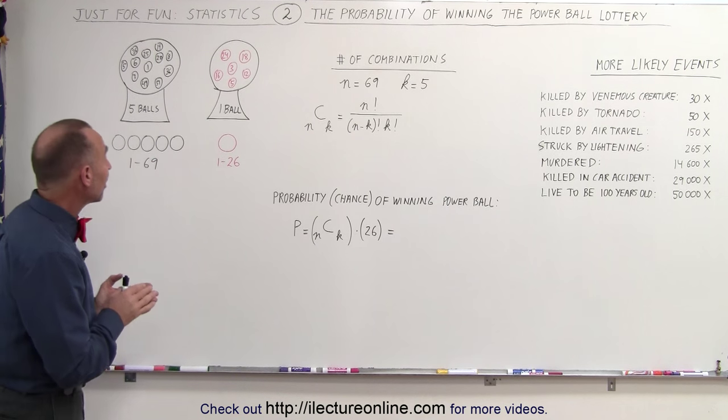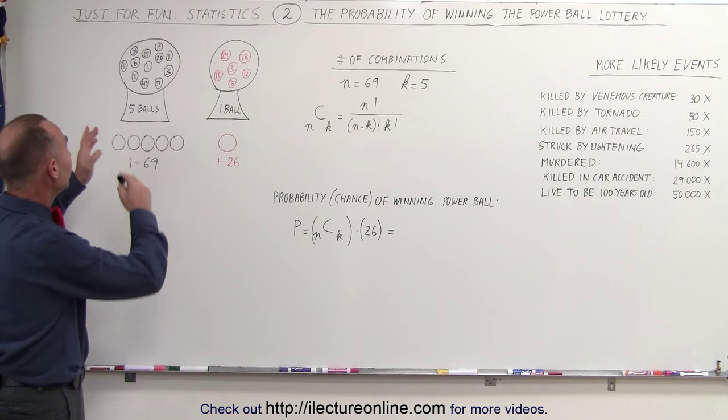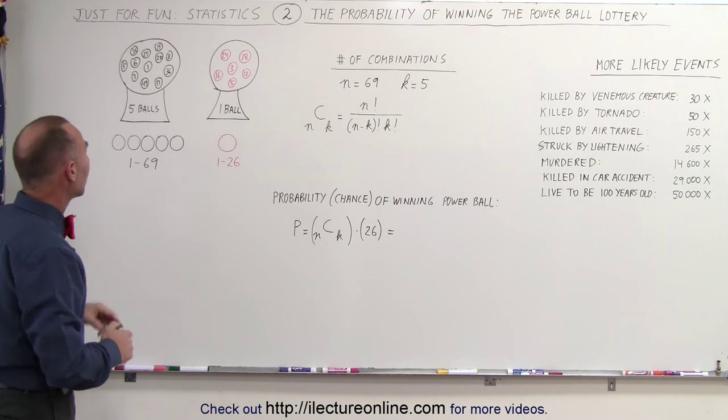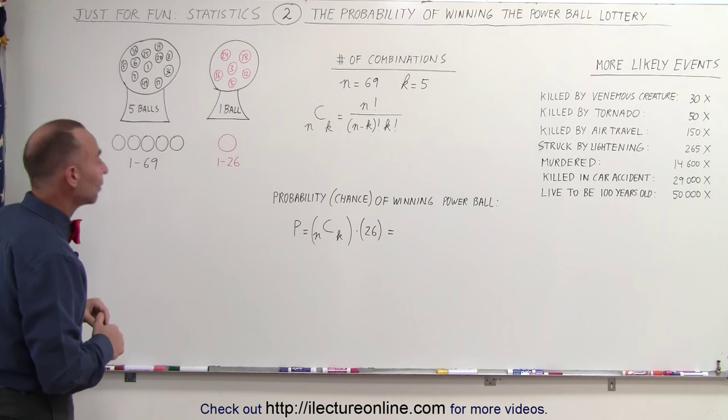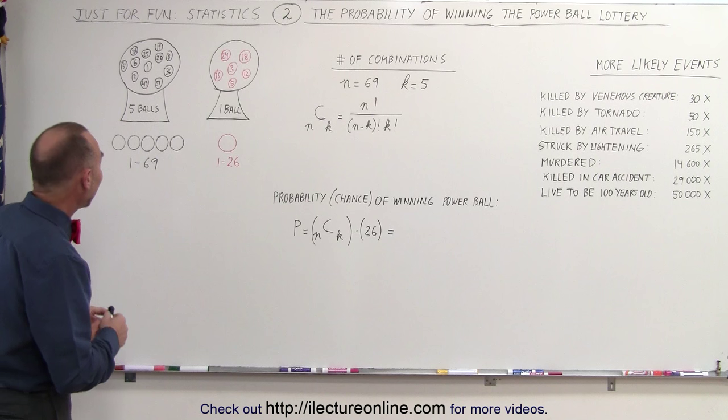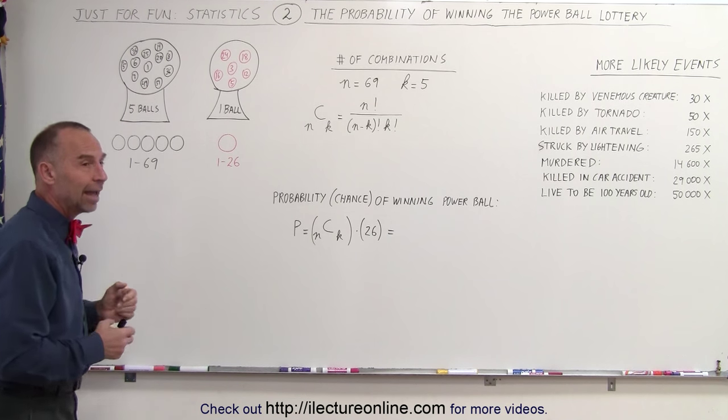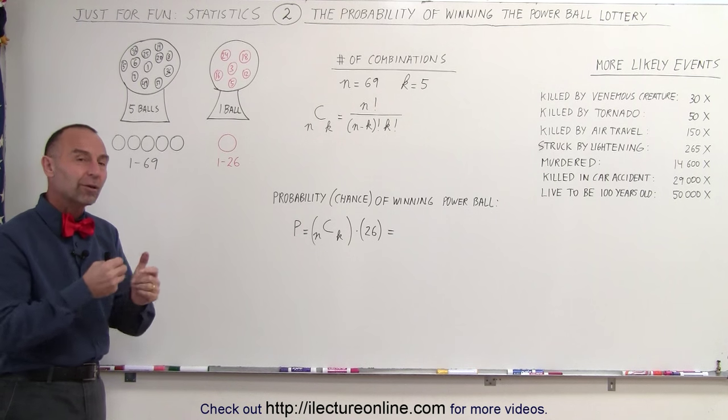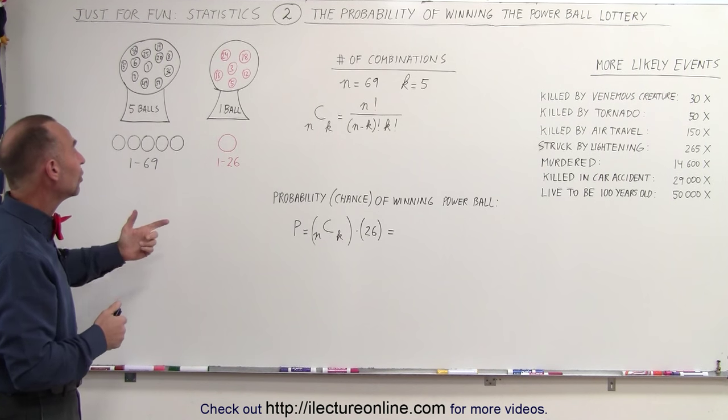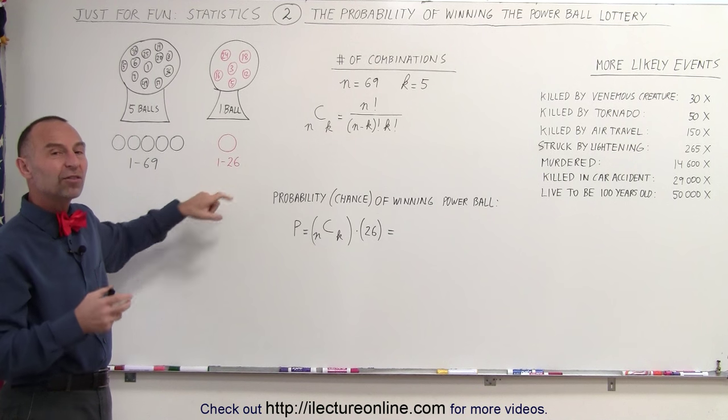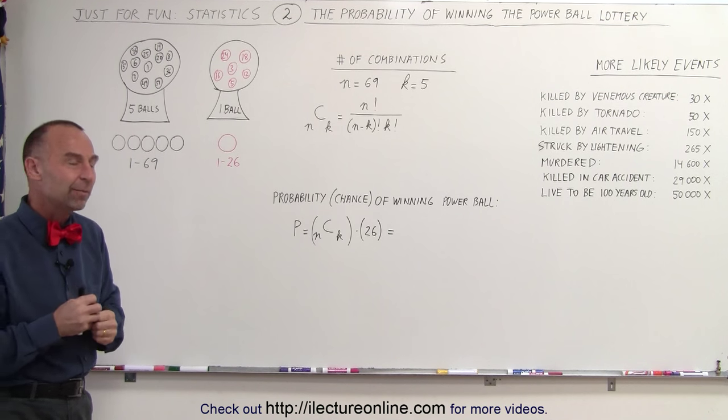The way the Powerball lottery is set up is that they have a machine that contains 69 balls, we call them the white balls, and those 69 balls have numbers on them anywhere from 1 to 69, and five of those balls are drawn from the machine. In addition to that, there's a second machine that contains 26 red balls, and one of those red balls is drawn from that.